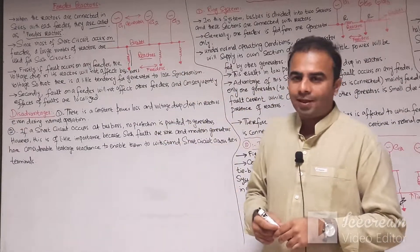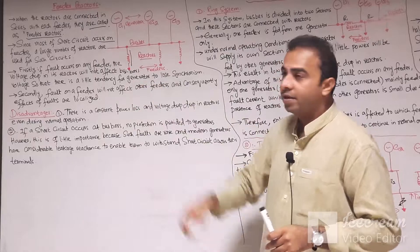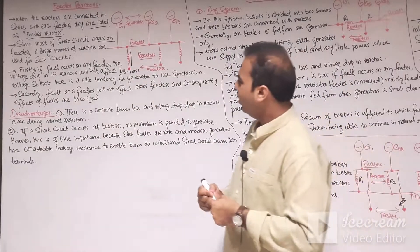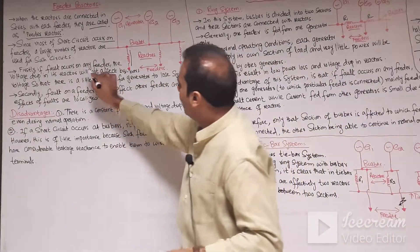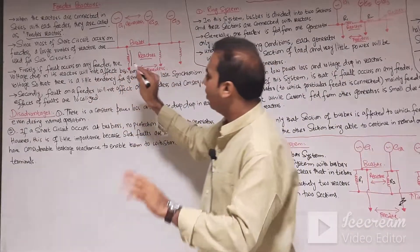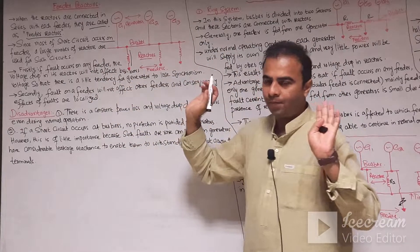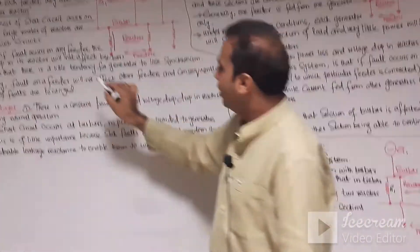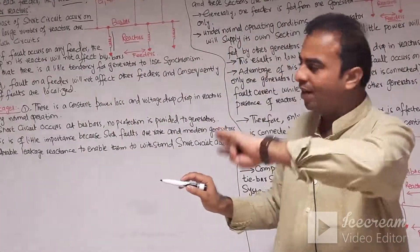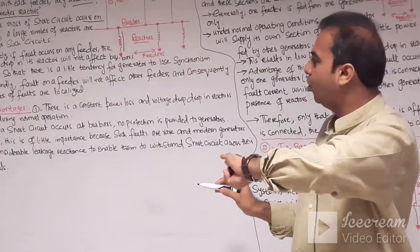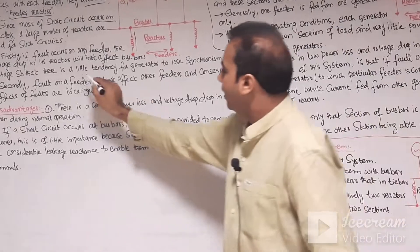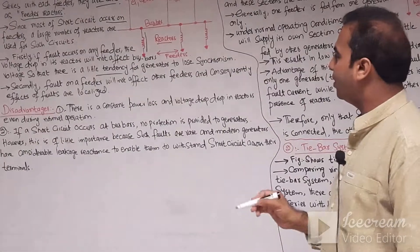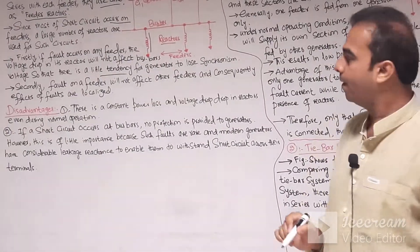Let us discuss the advantages of the feeder reactor. Firstly, if a fault occurs on any feeder, the voltage drop in its reactor will not affect the bus bar voltage, so there is little tendency for the generator to lose synchronism.